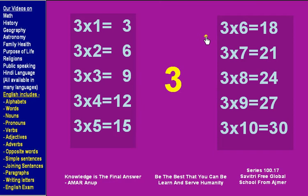3 times 6 is 18, 3 times 7 is 21, 3 times 8 is 24, 3 times 9 is 27, 3 times 10 is 30.